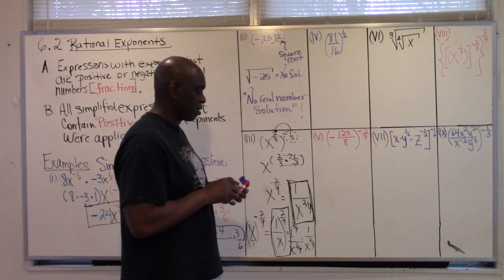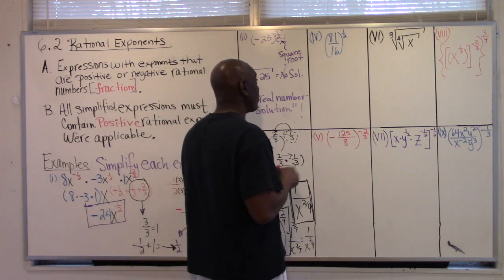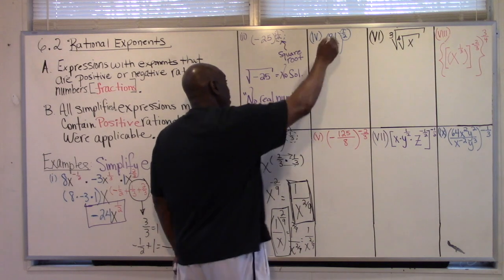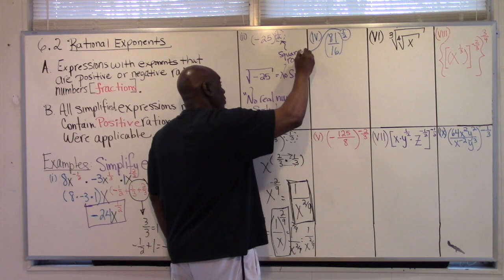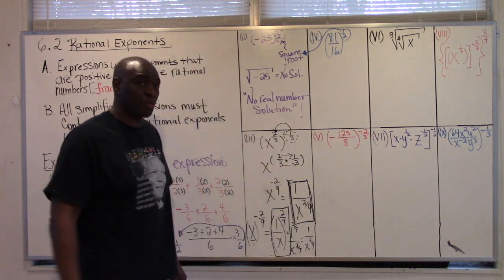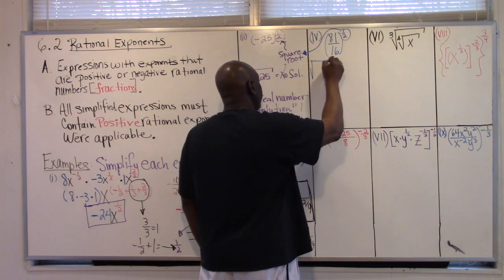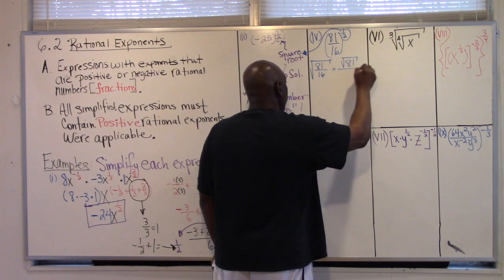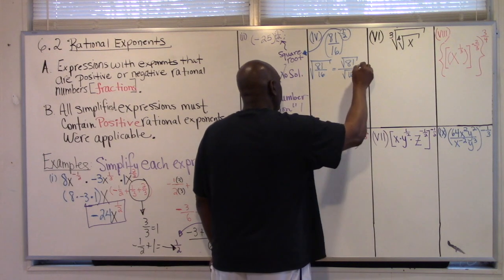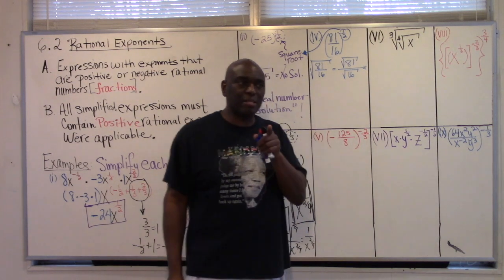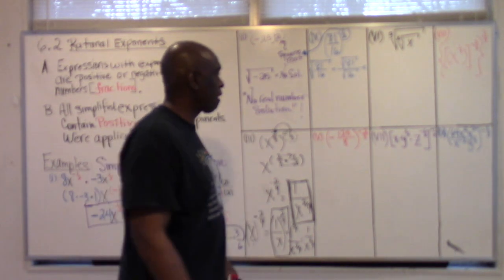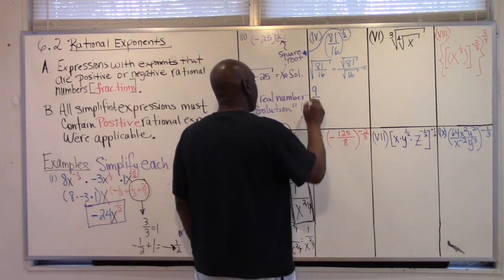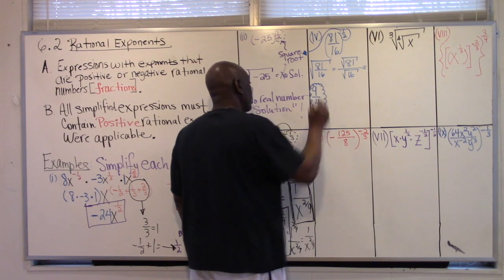Number four: does anyone recall what this one-half exponent represents? One-half represents square root. So we have the square root of 81 over 16, which equals the square root of 81 divided by the square root of 16 — many of these rules we talked about in Lesson 6.1. That's going to give me 9 over 4, and I'm finished with that. The answer is 9 fourths.